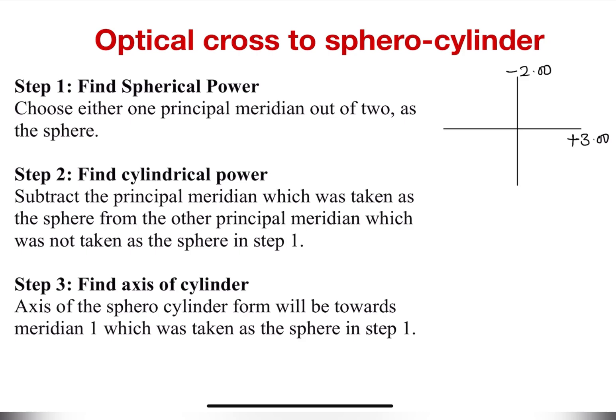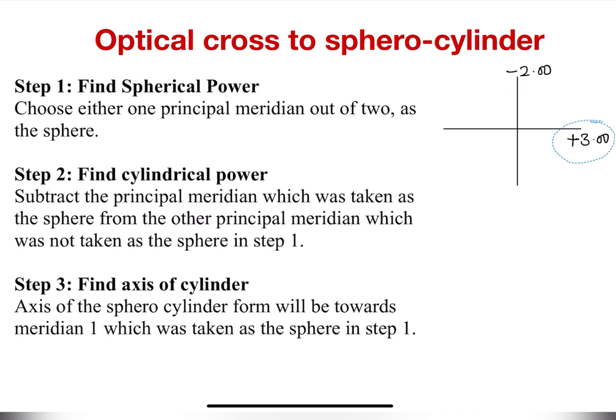Hello everyone, welcome to my channel. In this video we'll be learning about how we can convert our optical cross value to sphero-cylindrical value. This type of conversion is important when we want to convert our gross or net retinoscopy value to sphero-cylindrical value. Optical cross or power cross values are represented where each line represents the principal meridian — one is the power meridian and the other is the axis meridian.